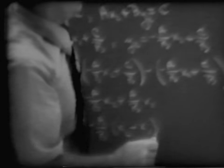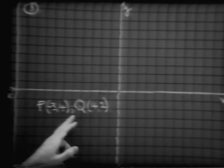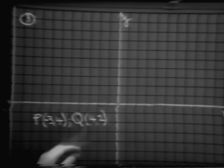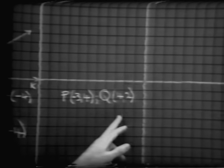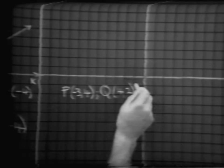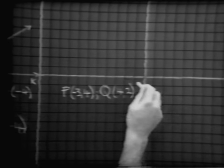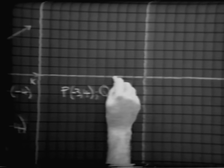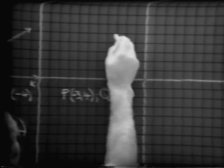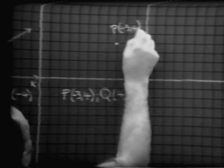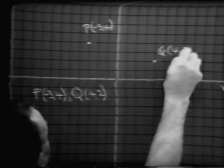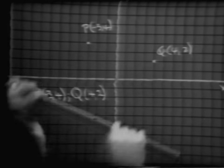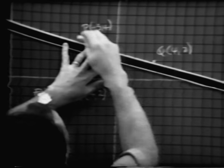Let's look at another example. Take two points: P with coordinates of negative 3, 4 and Q with coordinates of 4, 2. On the basis of the definition, you don't have to make a picture to find the slope number between two points. But let's make the coordinate system and graph it. P at negative 3, 4 and Q at 4, 2 are plotted, and we draw the line passing through those two points.